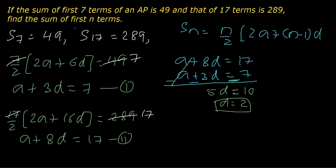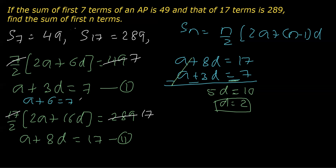Now we can get the value of a by replacing d with 2. This turns out to be a plus 3 times 2, that is a plus 6 equals 7. This implies a equals 7 minus 6, which is 1.